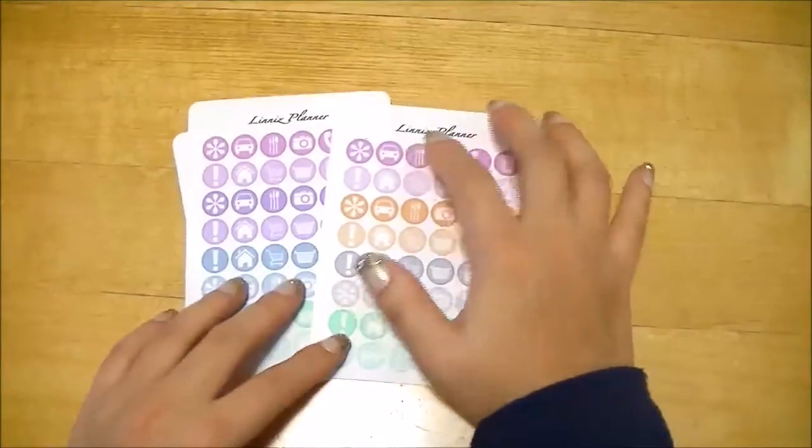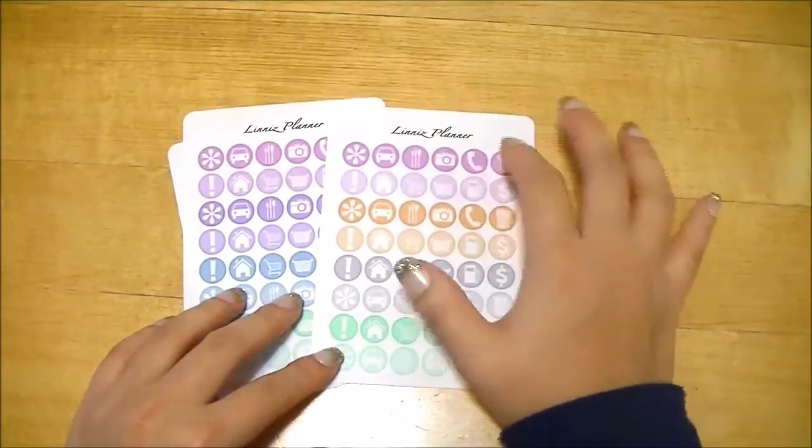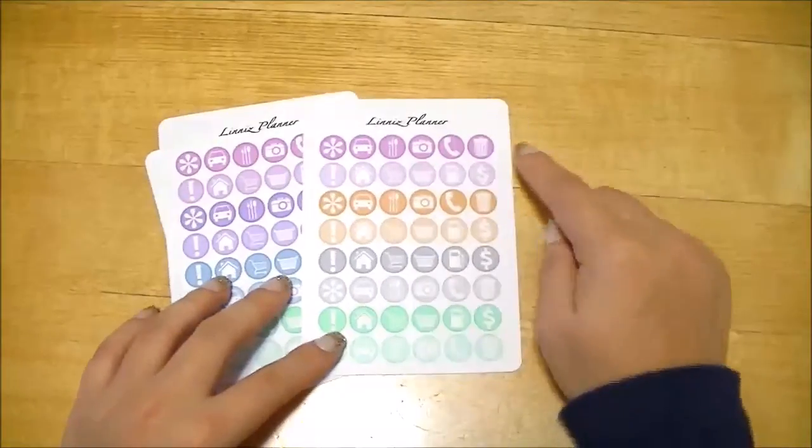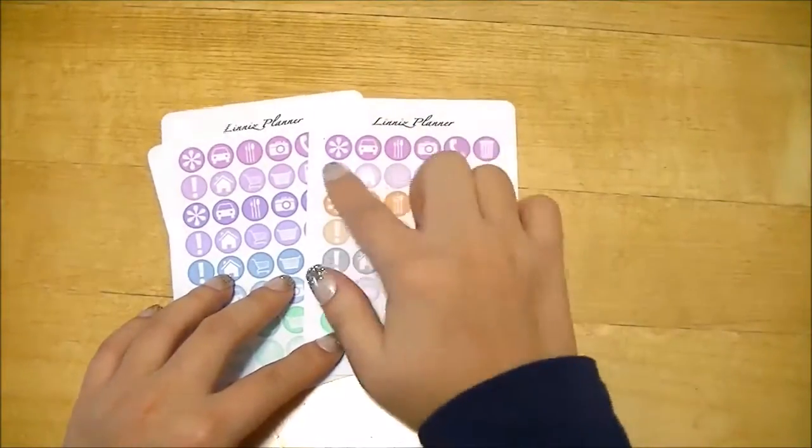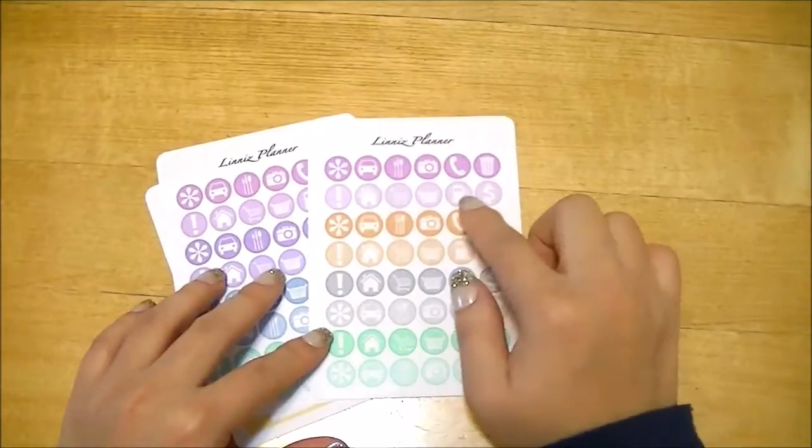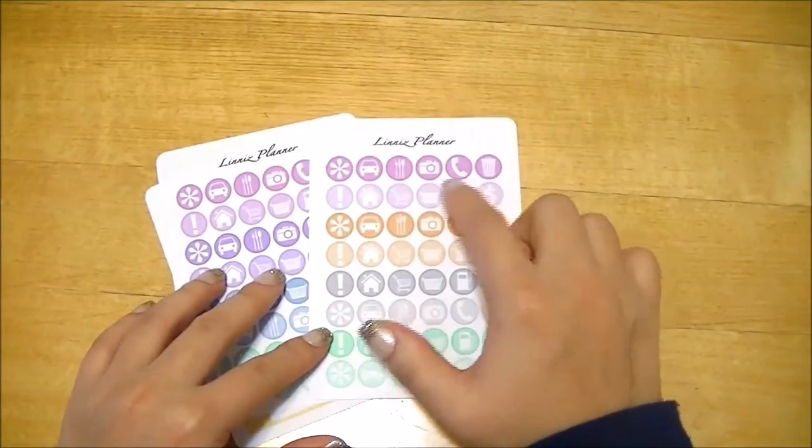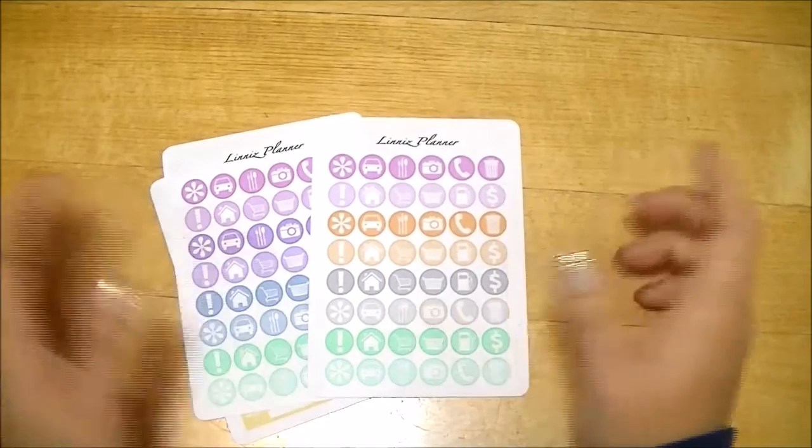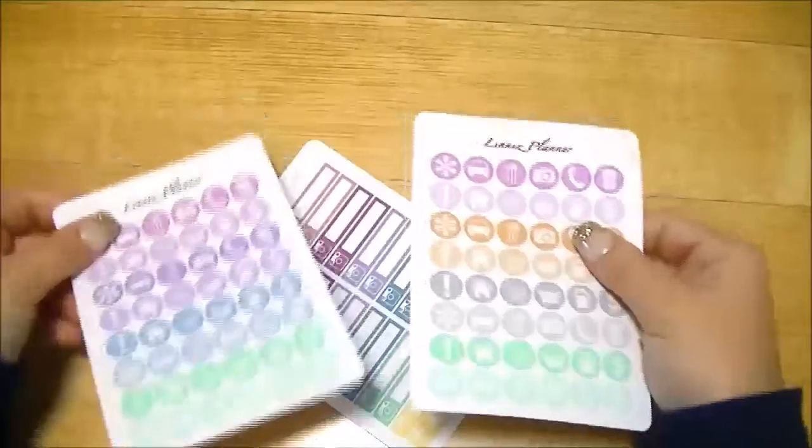So they have asterisks, car, cutlery, camera, phone, trash can, exclamation mark, house, grocery cart, laundry basket, gas, money, and just stuff like that. So I got them in her two different color schemes.